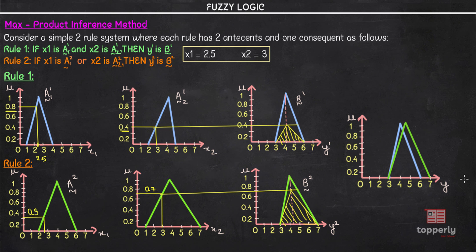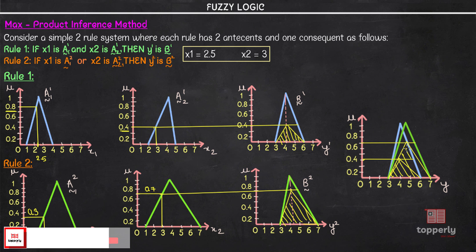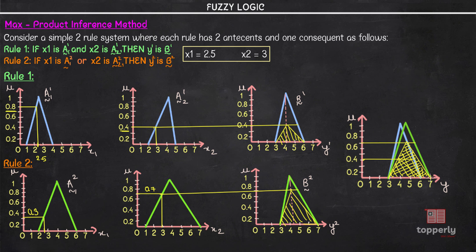In the combined output graph for y1 and y2, we mark membership values 0.4 and 0.7 and draw the scaled membership functions accordingly. The entire resulting area becomes the aggregated output function y. After this, we defuzzify to obtain the crisp value y* using any defuzzification method studied previously. This is how you represent the max-product inference method of a Mamdani system.